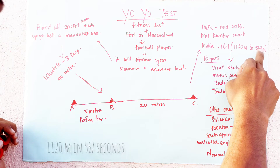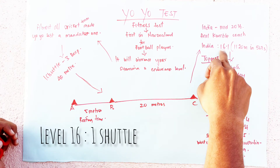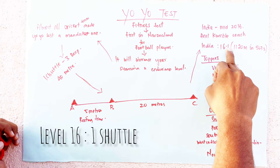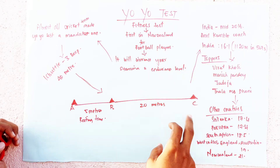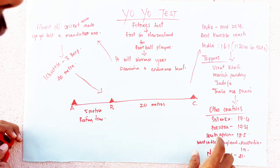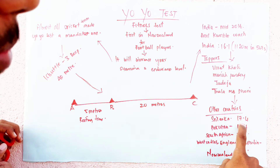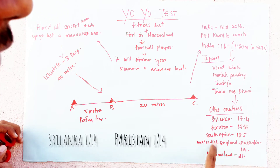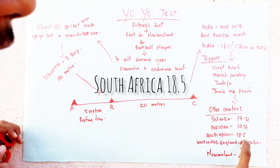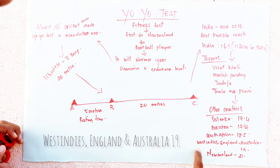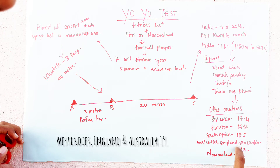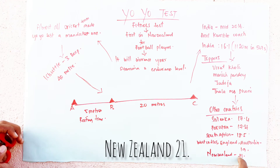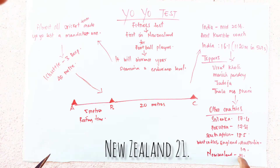Different countries set different levels for the yo-yo test. India requires level 16.1. Sri Lanka and Pakistan require 17.4. South Africa requires 18.5. England, West Indies, and Australia require 19. New Zealand has the highest level at 21.